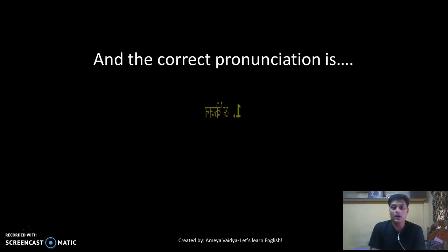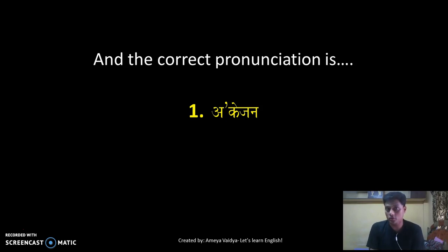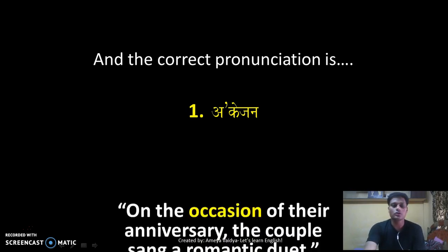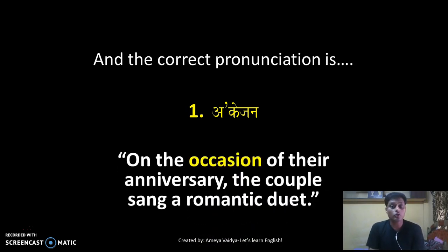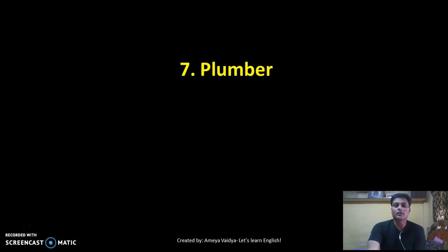The correct way to pronounce is number one: 'occasion.' Just because it begins with 'o,' don't be tempted to say it any other way — it is purely 'oCAsion.' The apostrophe shows the stress is on '-CA-,' so it is 'oCAsion.' Example: 'On the occasion of their anniversary, the couple sang a romantic duet.'